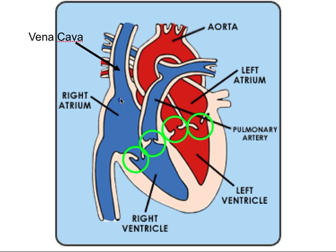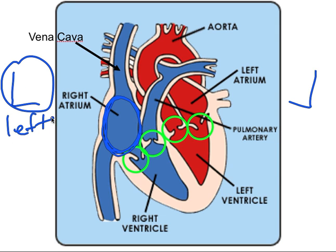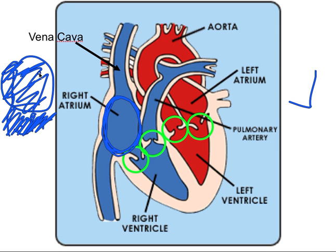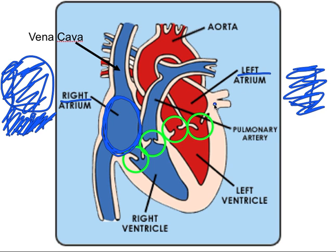Looking at the heart diagram, the upper right chamber — wait, this appears on the left-hand side of the diagram. Put your fingers out with thumbs in the middle: the 'L' shape means left. But if you're looking at another person, what's on the left side of the image is their right side. So in anatomy diagrams, we use the perspective of the person being viewed — so this is the right atrium.